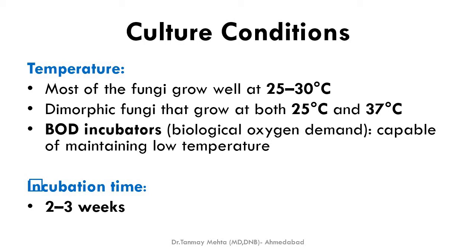Most fungi grow well at 25–30°C, but since many systemic fungi that affect humans are dimorphic, we also grow them at 37°C. Two slants of culture medium are always used — one kept at 25°C and one at 37°C — using BOD incubators capable of maintaining low temperatures. Fungi are slow-growing organisms compared to bacteria; they typically take a minimum of two to three weeks to grow properly.